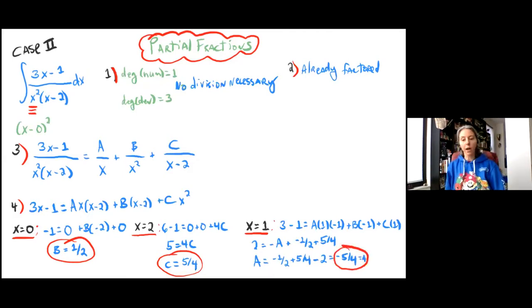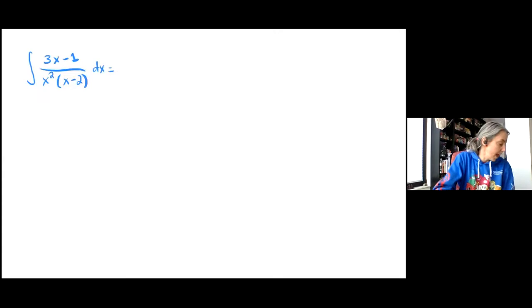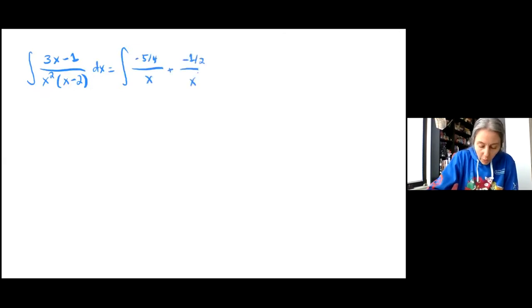All right, so we've got our A, B, and C. Now we need to go back and rewrite our integral. So we end up with the integral of 3x minus 1 over x squared times x minus 2 dx is equal to A, which was negative 5 over 4, over x, plus B, which was negative 1 half, over x squared, plus C, which was 5 over 4, over x minus 2 dx.